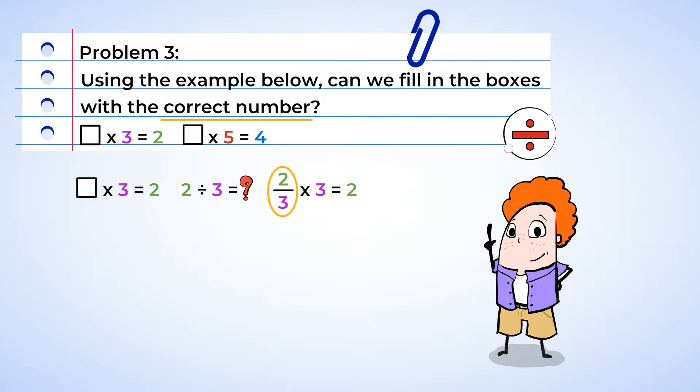Fantastic! Now let's do the same thing with the second equation. What times five is equal to four? Well, let's write this as a division problem again. Four divided by five is equal to what? Well, we can write the division as a fraction: four over five. And there we go. Four-fifths multiplied by five is equal to four. Cool! Excellent work!